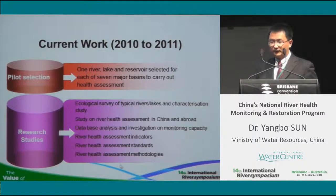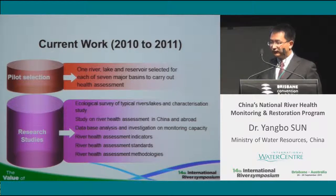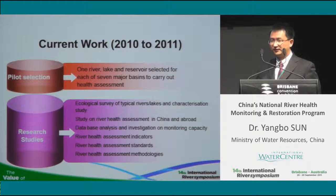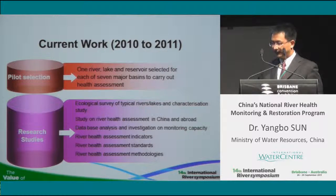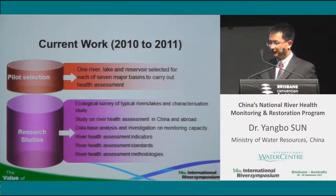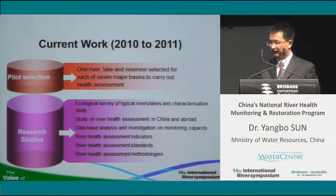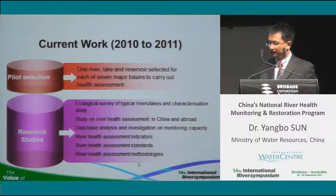For our current task this year, we are working on pilot selections. According to the plan, we are going to select one major river and one major lake from each of the large river basins across China, meaning we will have seven pilot rivers covering China from north to south as typical samples for pilot research. We are also carrying out a series of studies, including building assessment metrics, standards, principles, indicators, and methodologies. Part of this work has been done jointly with our Australian partners — thank you for your cooperation.